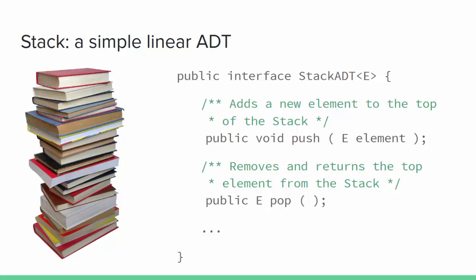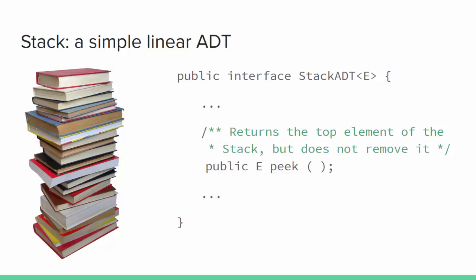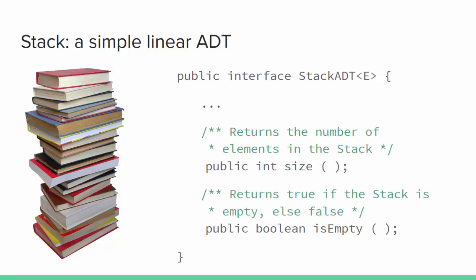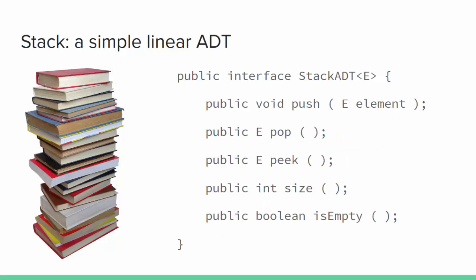This example adds comments for push and pop operations. Push is the one that adds the new element, and pop is the one that removes an element. We've also added a comment for the peek method — the one that returns the top element but doesn't remove it. And finally we have comments for size and isEmpty. Size tells you how many elements are in the stack, and isEmpty returns true or false telling you whether the stack is empty or not.